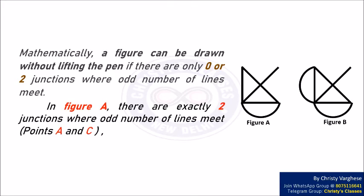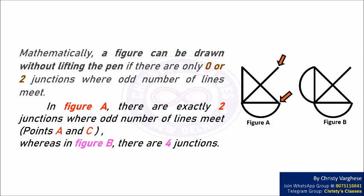In figure A, there are exactly two junctions where an odd number of lines meet. These are points A and C. Whereas in figure B, there are 4 such junctions.